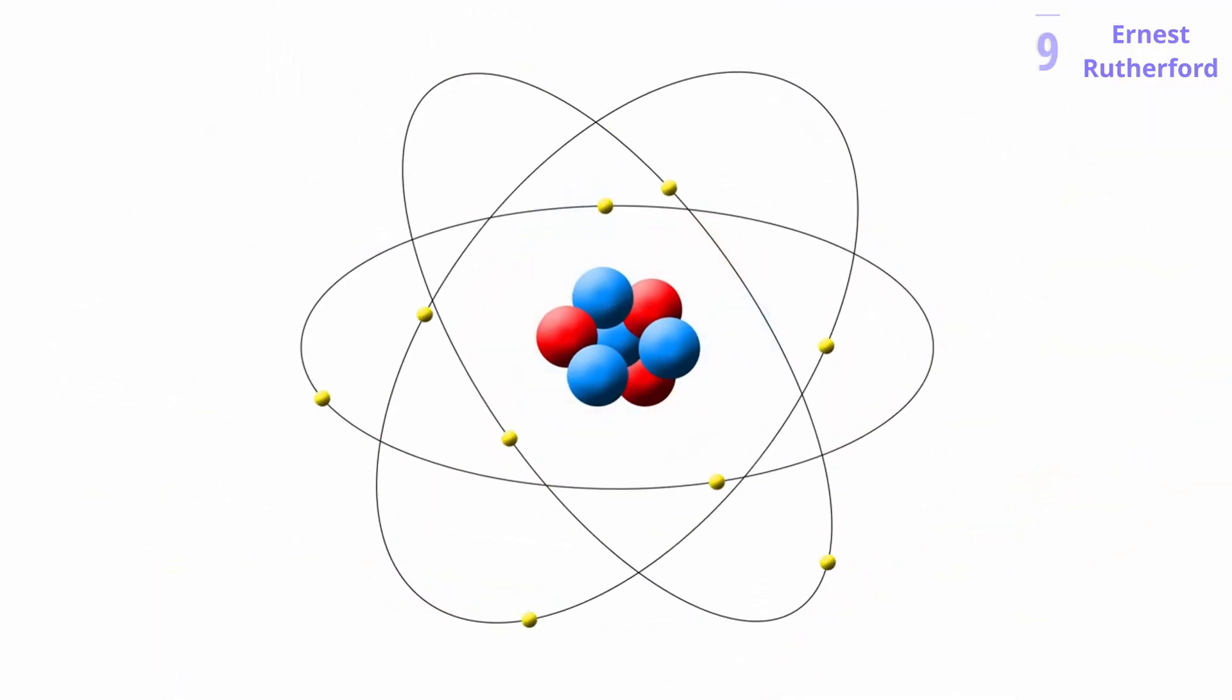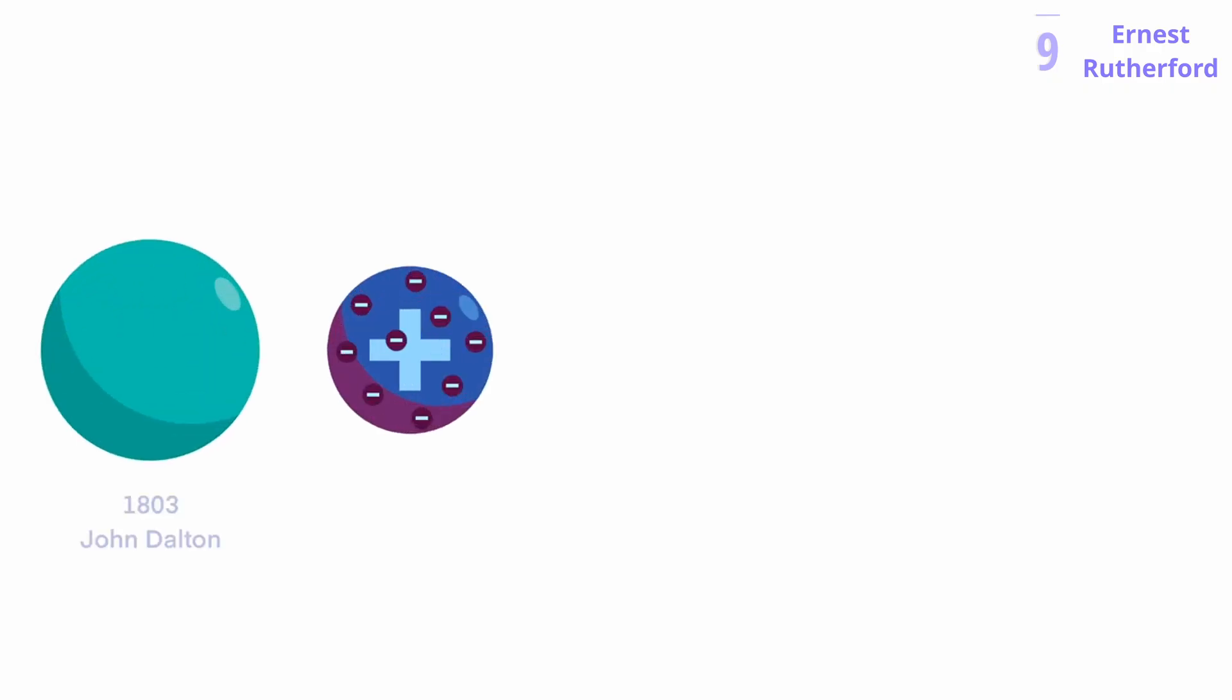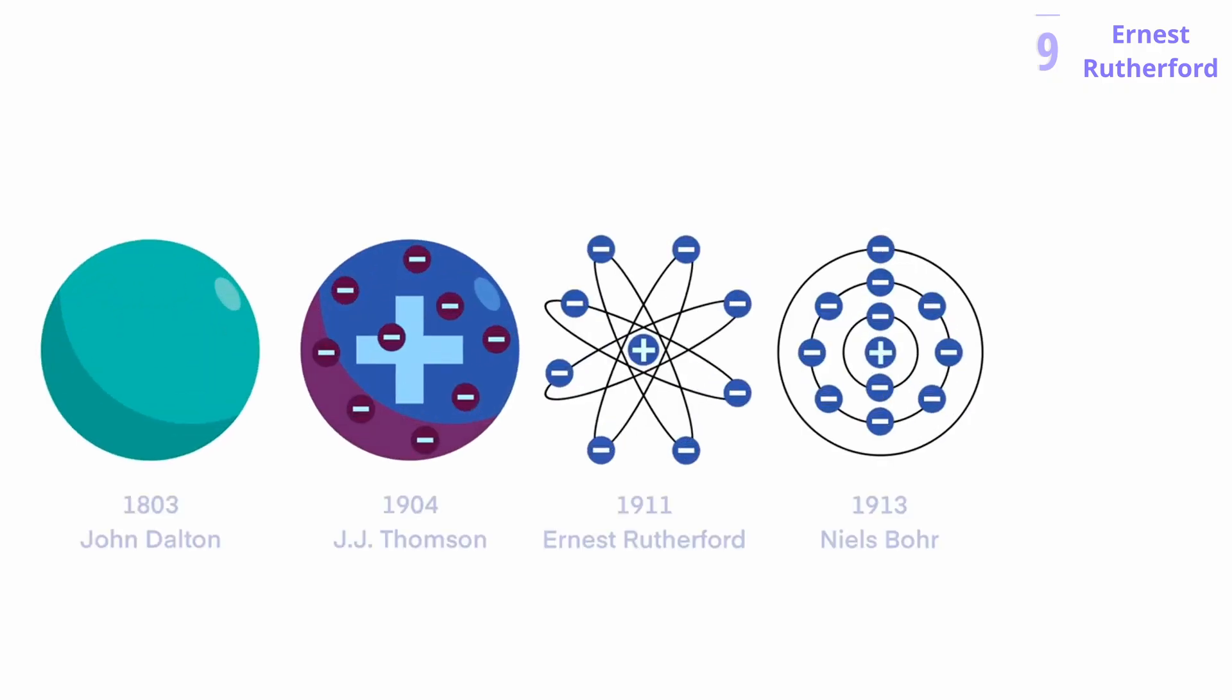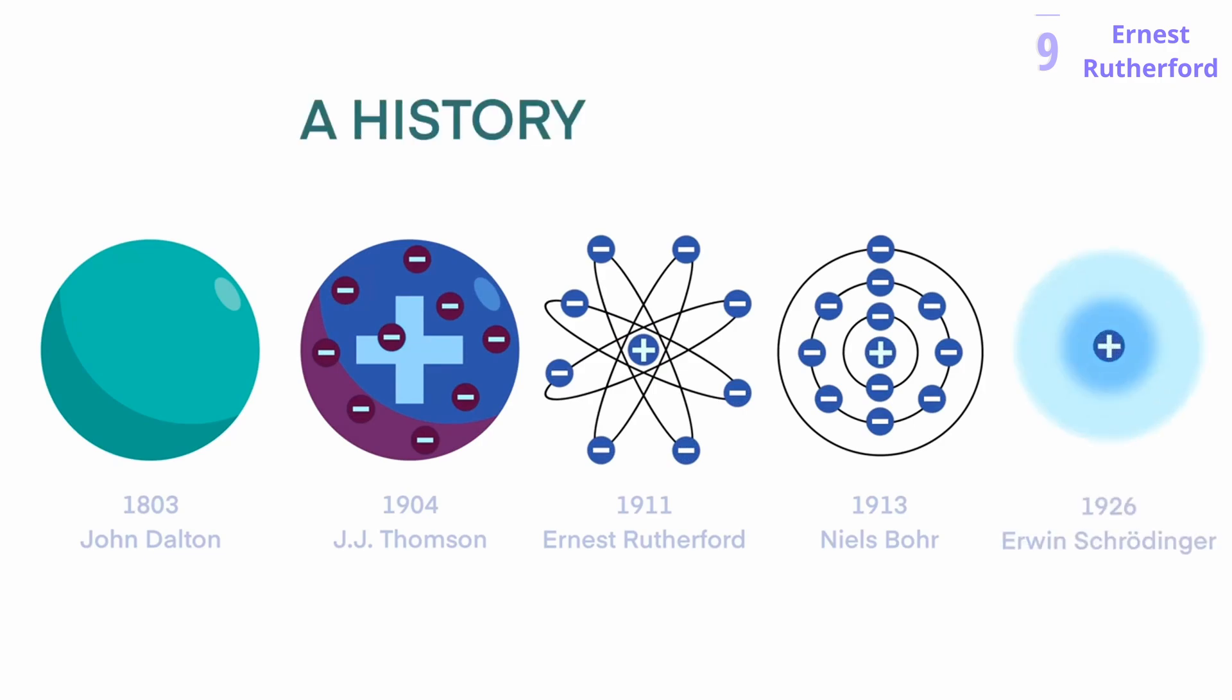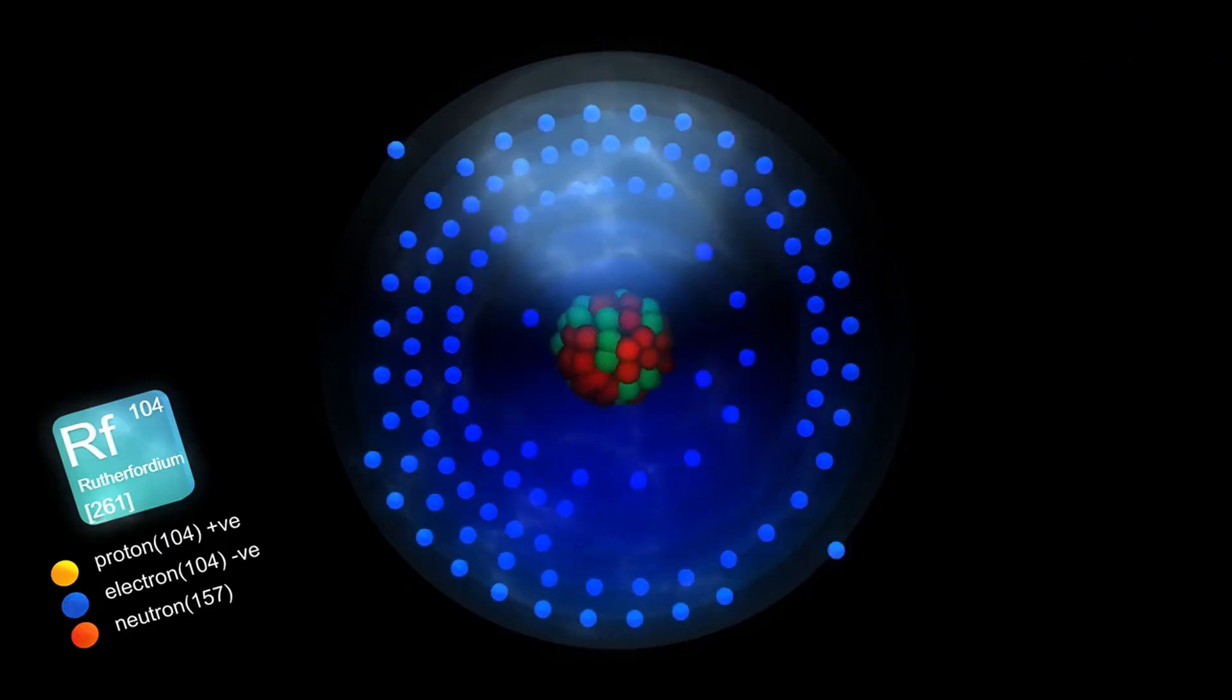Through his gold foil experiment, Rutherford discovered the existence of a tiny, incredibly dense core within the atom, now known as the nucleus. This discovery revolutionized our understanding of the atom's structure. Rutherford's work laid the foundation for further exploration of the atom's substructure, leading to the development of the modern atomic model we know today. He also identified the proton, a fundamental building block of the nucleus.